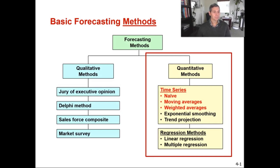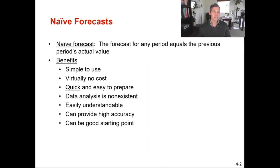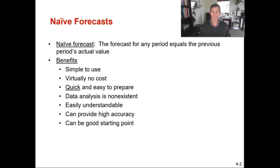So what is a naive forecast? A naive forecast is the forecast for any period that equals the previous period's actual value. The benefits of this kind of forecast is that it's easy to use — you don't have to calculate anything. It's great if you don't have a whole bunch of data, it's easy for people to understand, and in some settings it can provide a high level of accuracy.